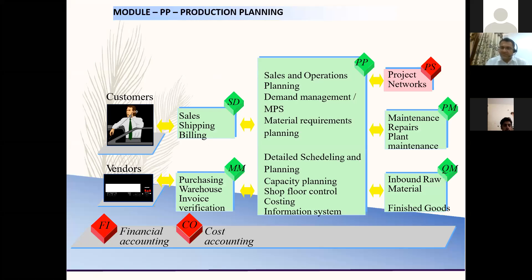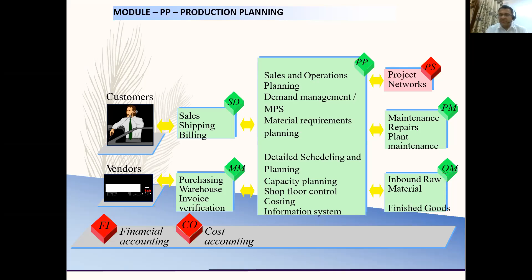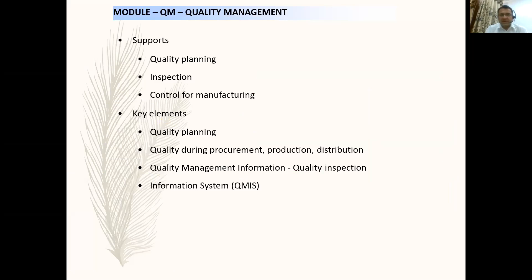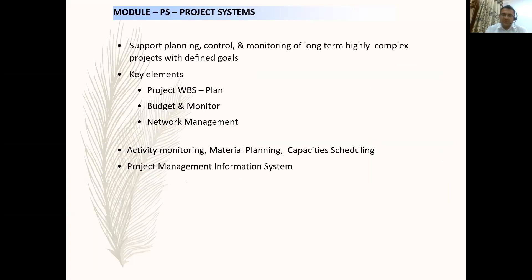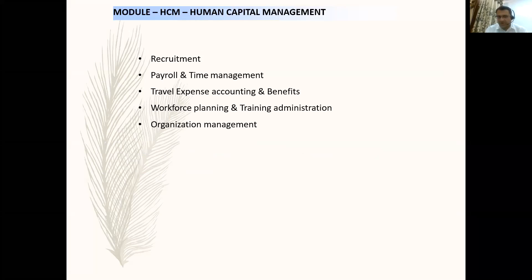There is also the Plant Maintenance (PM) module that takes care of maintenance repairs — if you have a broken machine, SAP creates maintenance orders to get it repaired. Quality Management (QM) module takes care of inspections and certifications for finished goods — planning for quality and controlling manufacturing quality. Project Systems module manages enterprise projects, project financials, tracking activities, and monitoring project goals. Finally, the Human Capital Management module covers recruitment, payrolls, time management, travel expenses, workforce planning, and organization management.